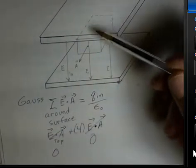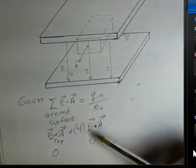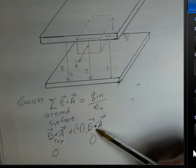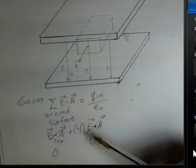Anytime we have a dot product of two vectors that are perpendicular, the result is zero. So we've done the top. The four sides contribute nothing to this sum because the vectors are perpendicular. The dot product of electric vector and the area vector is zero.